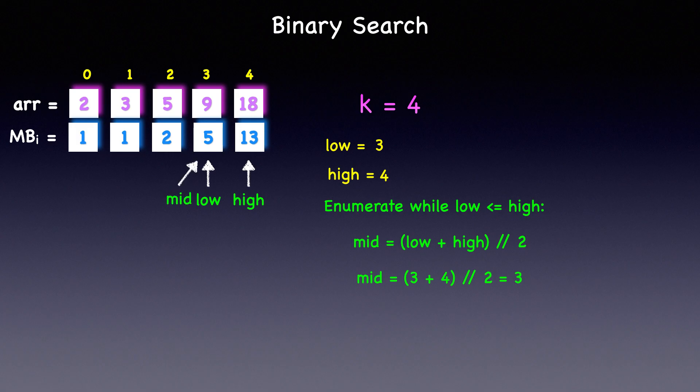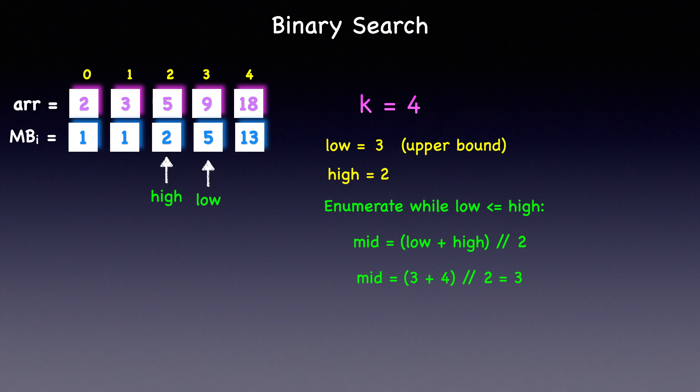The count of elements missing before mid is 5, which is greater than k, and so we'll search on the left side of mid by moving high to mid minus 1 at index 2. At this point, high is less than low, and so we'll break from the loop.